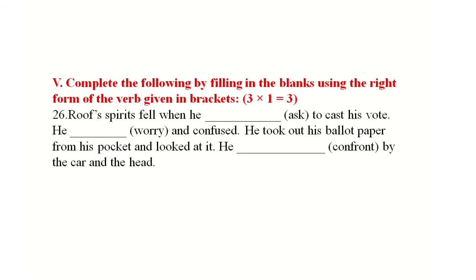This paragraph uses past tense throughout. The verbs in brackets need to be put in past tense form. The answers are: Rope's spirits fell when he was asked to cast a vote. He was worried and confused. He took out his ballot paper from his pocket and looked at it. He was confronted by the car and the head. So this paragraph uses passive voice verb forms — 'was asked' and 'was confronted' — as the subject requires passive constructions.